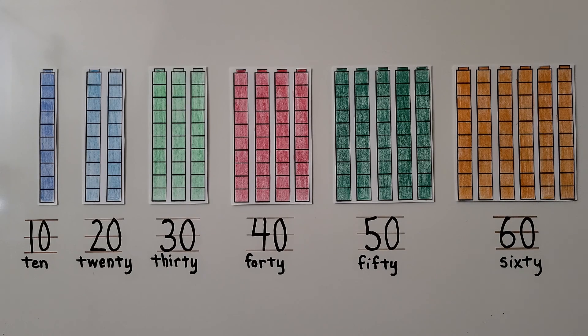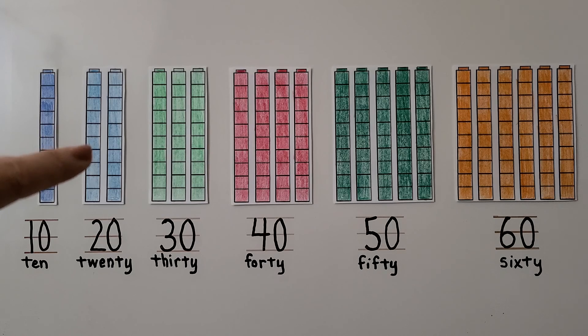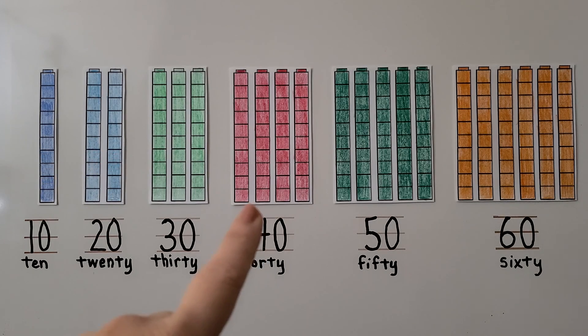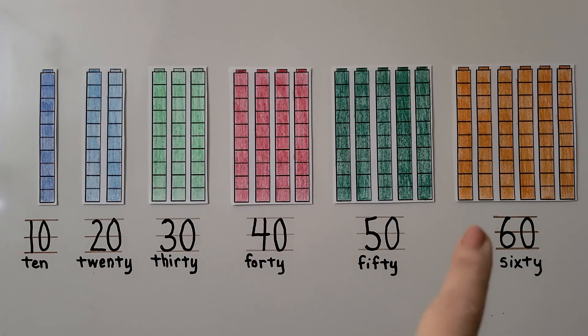We can skip count by tens. We point to each set as we skip count so we don't make a mistake. 10, 20, 30, 40, 50, 60.